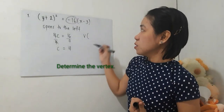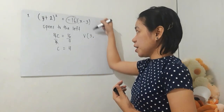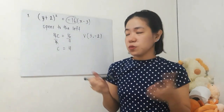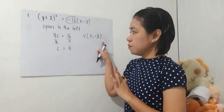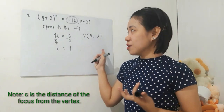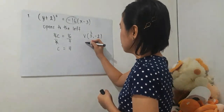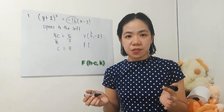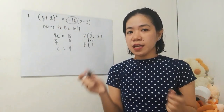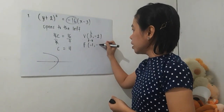We'll look at the vertex. H is always with x, so we have 3. Remember, when we take out the number, it becomes the opposite sign, so h equals 3. And k is always with y, so this becomes negative 2. The vertex is at (3, −2), and c equals 4. Remember that c is the distance of the focus from the vertex. Since it opens to the left, the movement will be along the x-axis. To find the focus, we subtract c from the x-coordinate: 3 minus 4 equals negative 1. Why subtract? Because it opens to the left — the focus is inside the curve, so we move to the left, which means negative. So the focus is at (−1, −2).